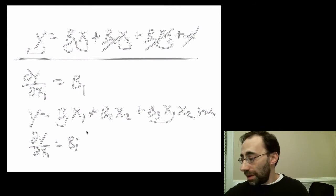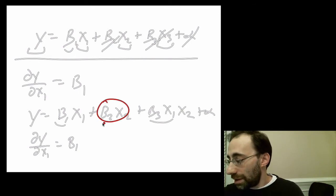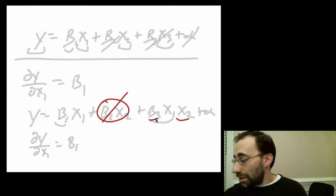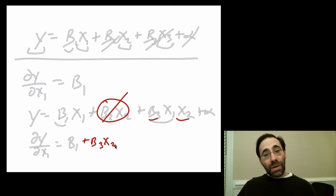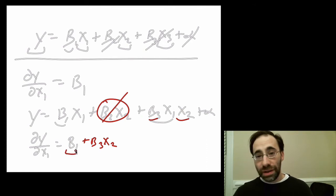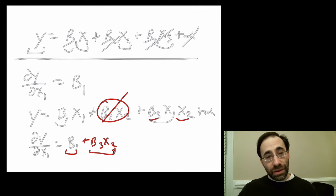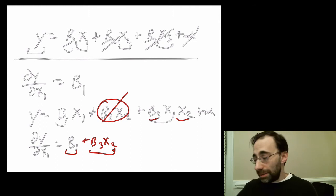Again, we have this first term here. This is a constant, so it just goes away. This and this are both constants. So we have just beta 3x2. So now we've learned that the rate of change of y in x is equal to this coefficient plus this other term, which depends explicitly on the other independent variable. So the marginal change in y with respect to x varies in the other x in x2. And again, the marginal change in y with respect to x1 varies with the other independent variable x2.